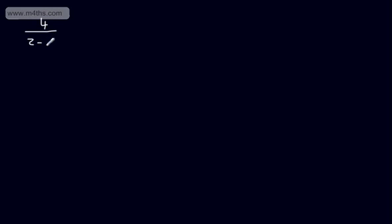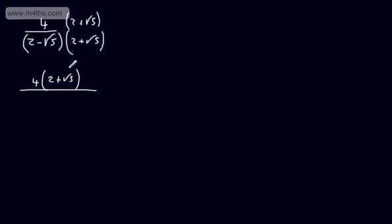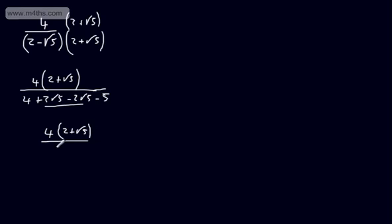Let's try 4 over 2 minus root 5. We need to multiply top and bottom by the conjugate: 2 plus root 5. The numerator becomes 4 times the quantity 2 plus root 5. In the denominator: 2 times 2 is 4, plus 2 root 5, minus 2 root 5, then minus 5. The middle terms cancel, and 4 minus 5 is minus 1. So we have 4 lots of 2 plus root 5 divided by minus 1, which we write as minus 4 times the quantity 2 plus root 5. That's now rational — effectively we have 1 in the denominator.